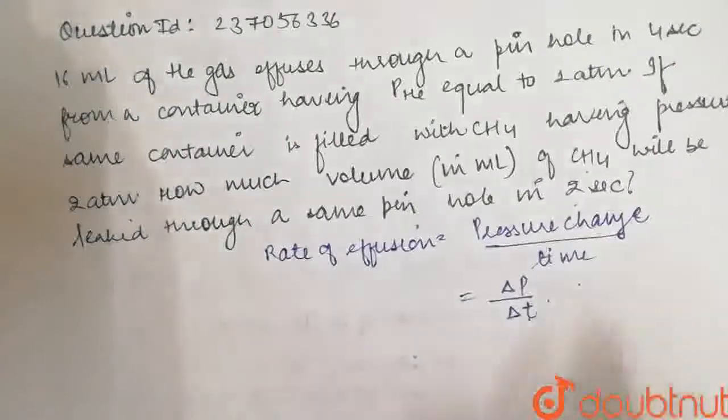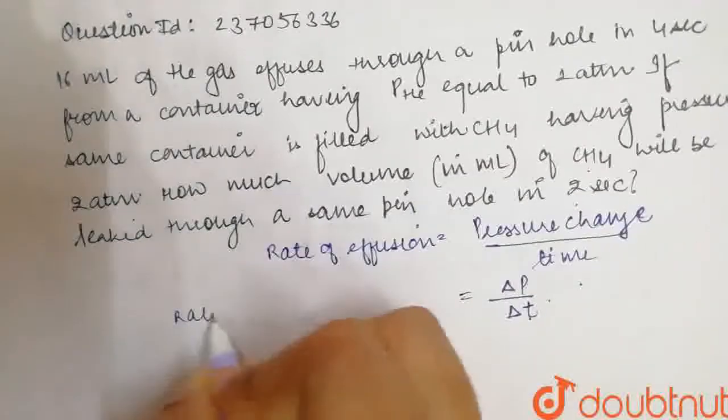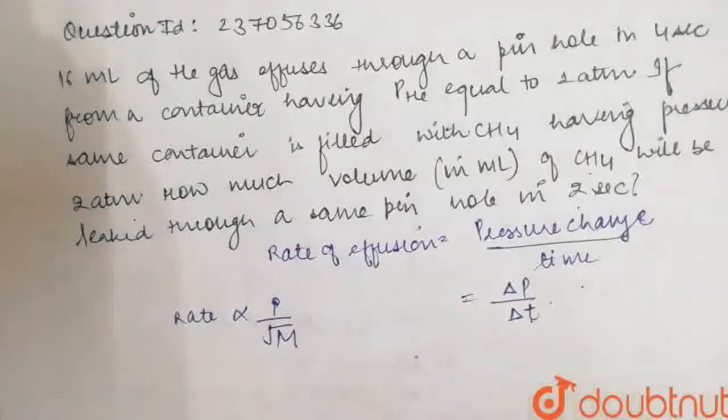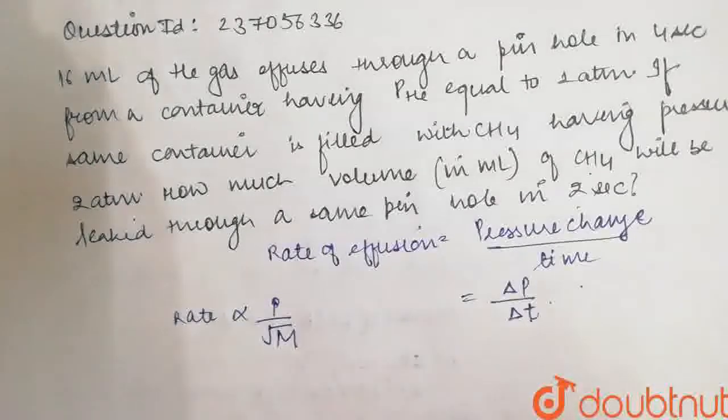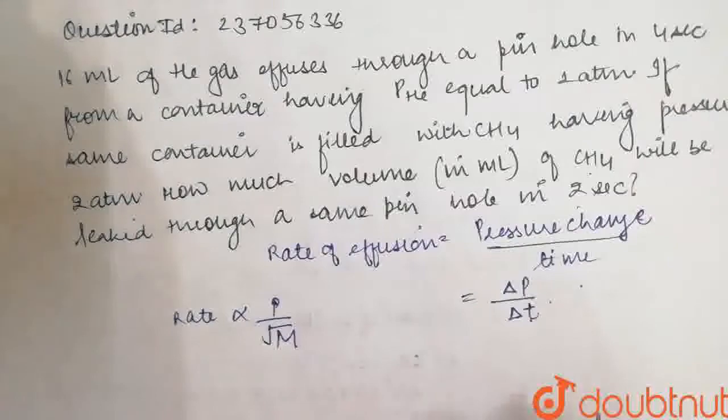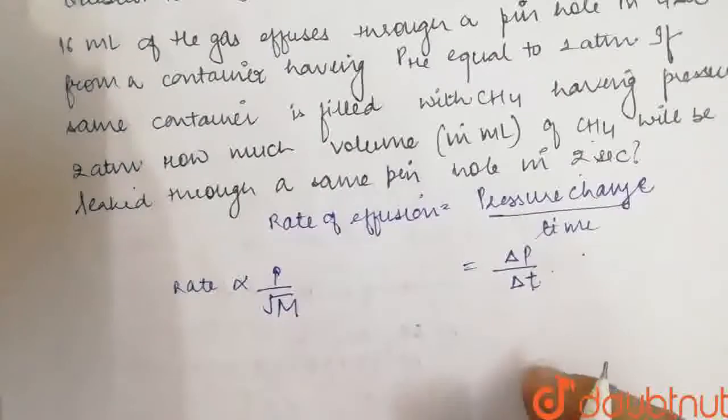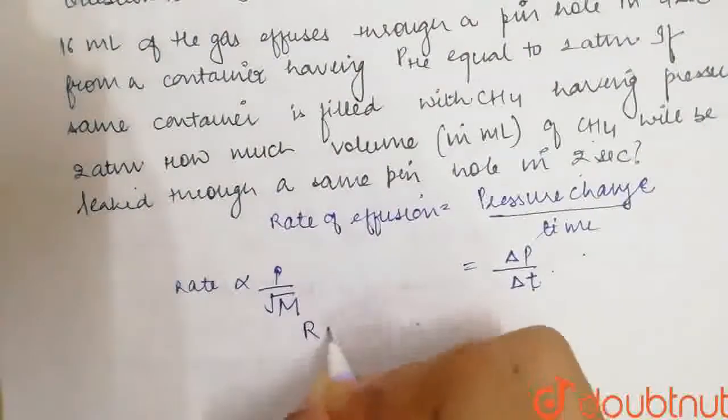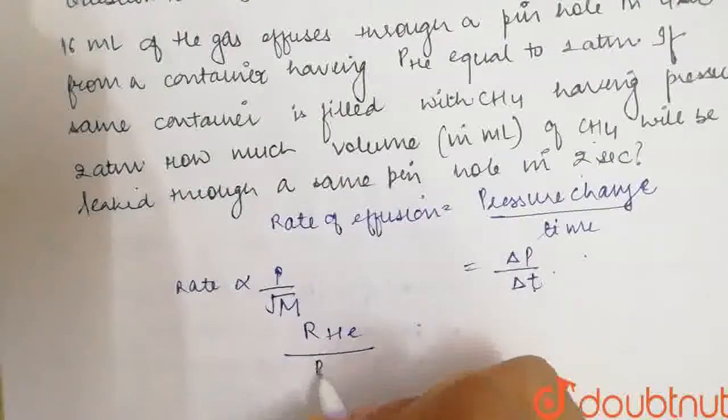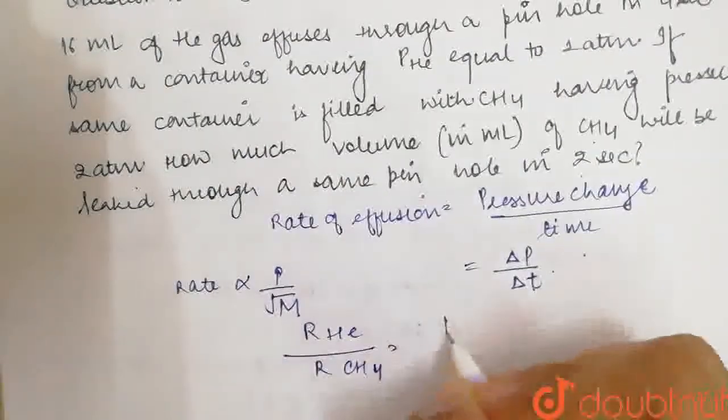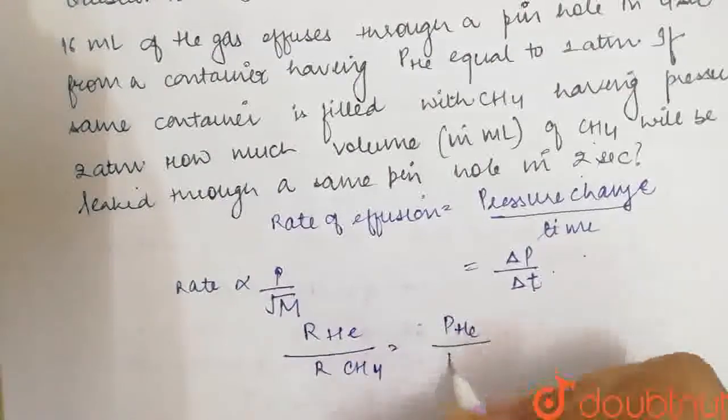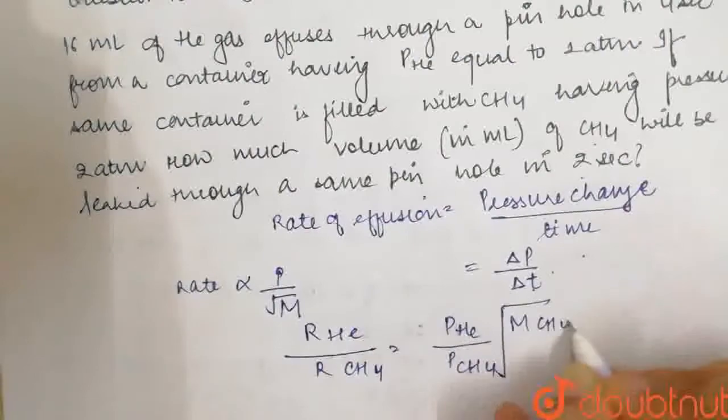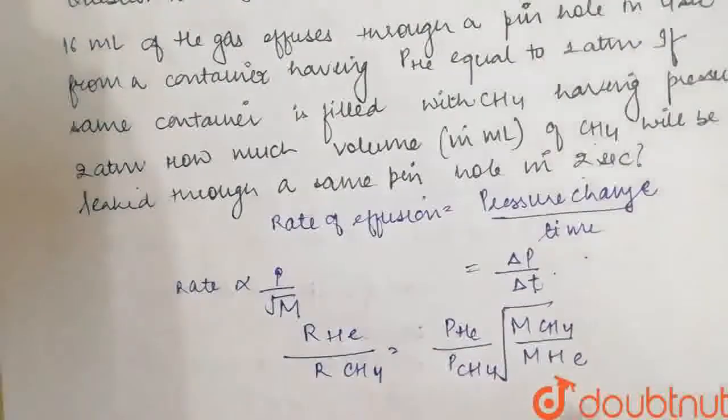So, the rate of effusion is P by under root of M. Now, how do we do this question? We have 2 gases. We can calculate the rate of effusion of helium upon rate of effusion of CH4 is equal to pressure of helium upon pressure of CH4 under root of M of molar mass of CH4 upon molar mass of helium.